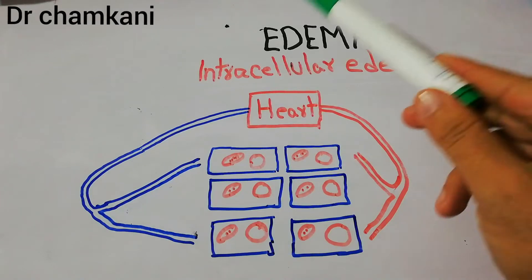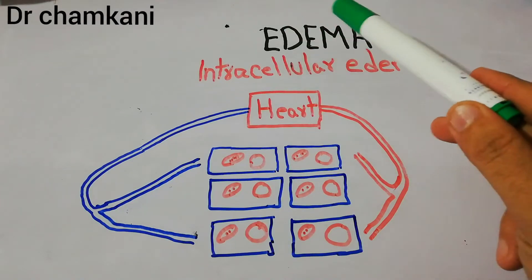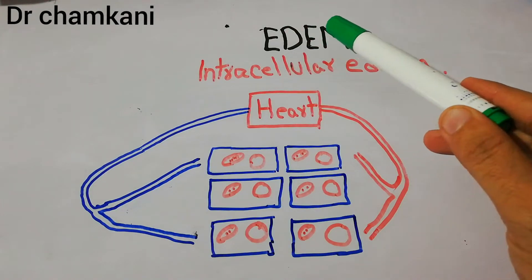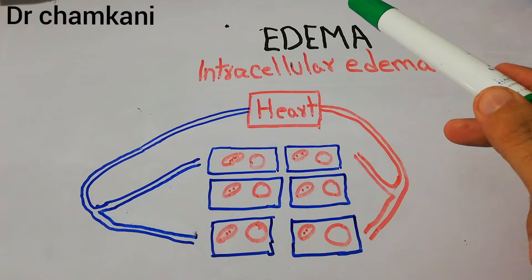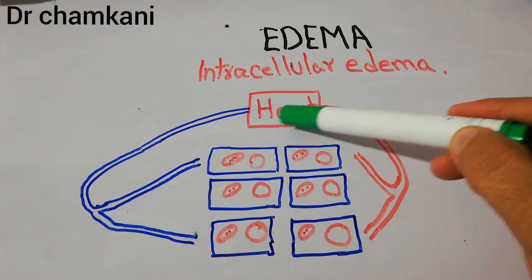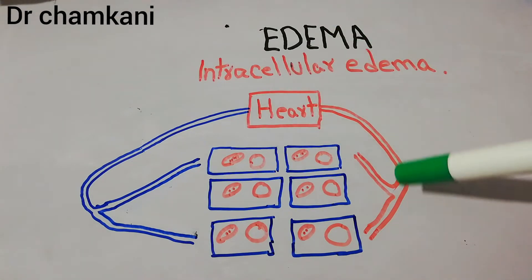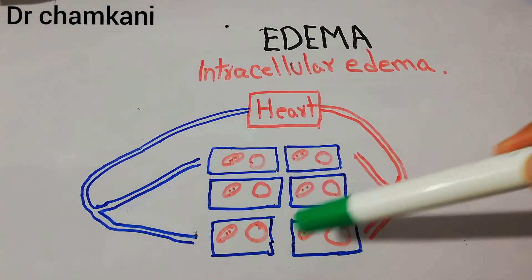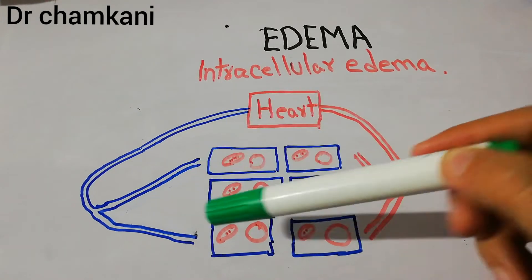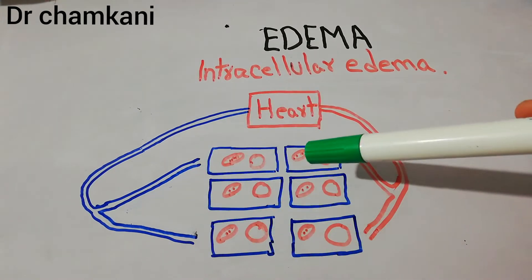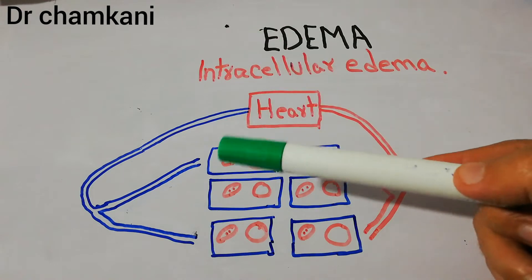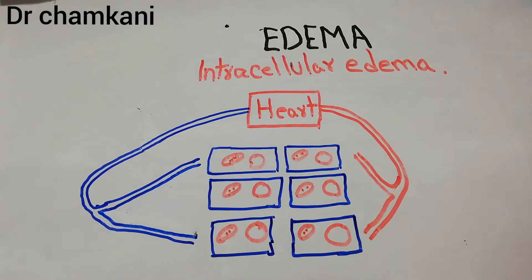Today we will talk about edema. Edema is basically the collection of excess fluid in the body tissues. For example, the human heart is pumping blood to the tissues, and inside the tissues, normally there is some fluid, but if there is collection of excess fluid, then this condition is known as edema.